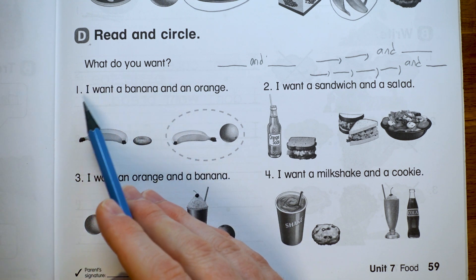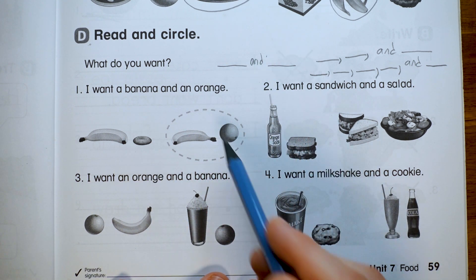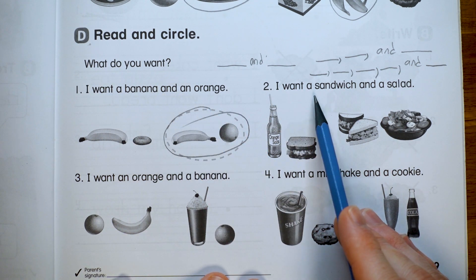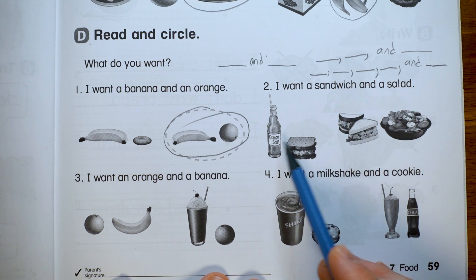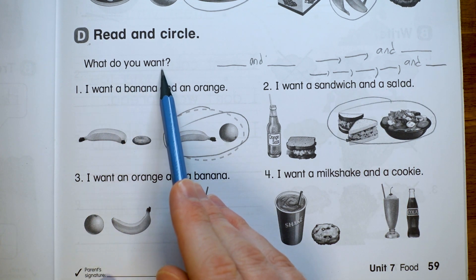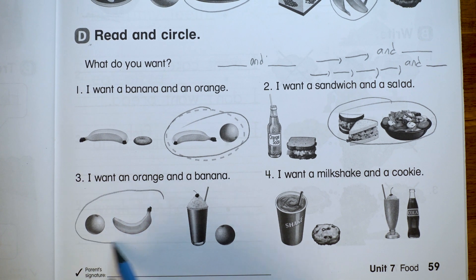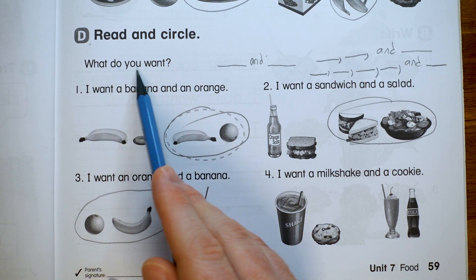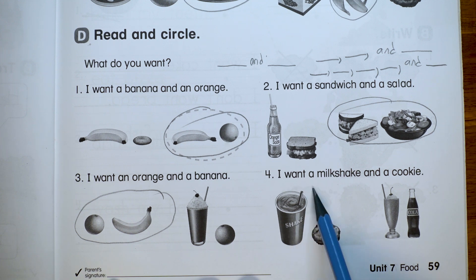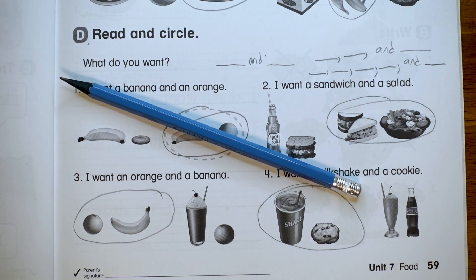Number one. What do you want? I want a banana and an orange. That's just a banana. Sorry. There's a banana and a cookie. Here's a banana and an orange. Number two. What do you want? I want a sandwich and a salad. Here's a soda and a sandwich. Here's a sandwich and a salad. Number three. What do you want? I want an orange and a banana. Here's an orange and a banana. Number four. What do you want? I want a milkshake and a cookie. Here's a milkshake and a cookie. All right. Part D is done, which means that our workbook is done for today. Great job.